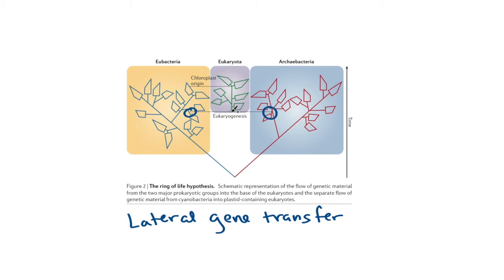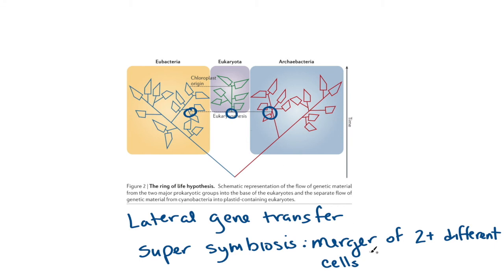So this is like a form of supersymbiosis in the sense that we have this merger of two or more very different cell types. And then it's a merger of these that was the common ancestor for eukaryotes.